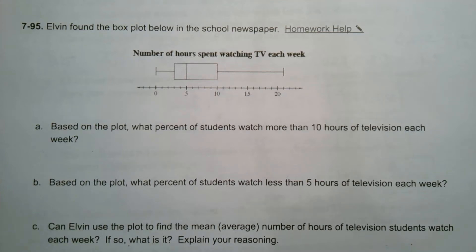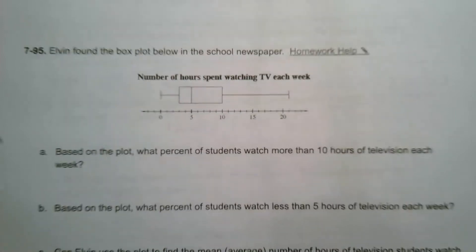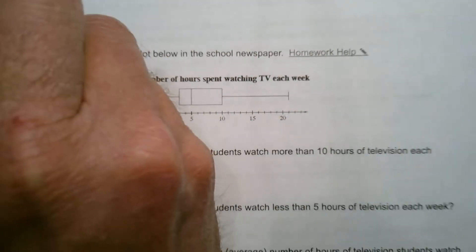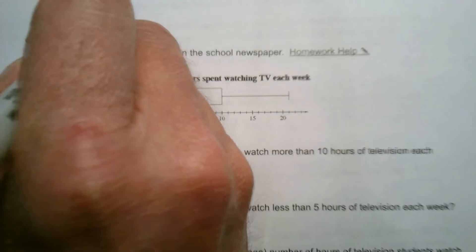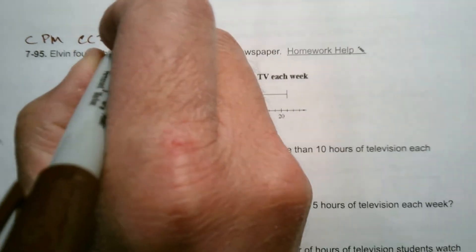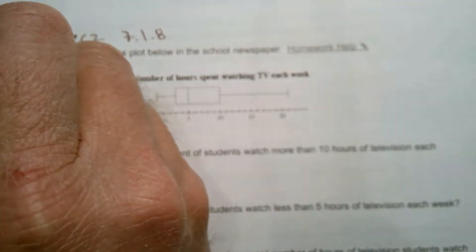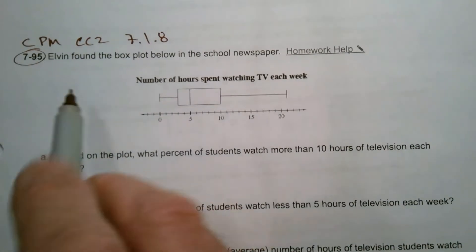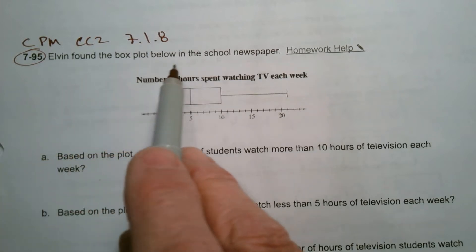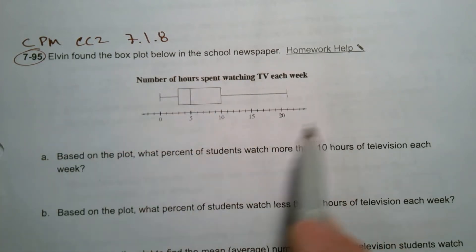Hey folks, Mr. Dell here. We are looking at a box plot and trying to analyze this box plot to answer some questions about the initial data. This is coming from CPM Course 2 and this is 7.1.8 and number 7-95. So it says Elvin found the box plot below in the school newspaper. So here's my box plot.